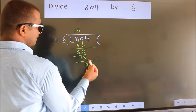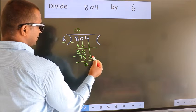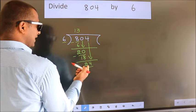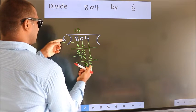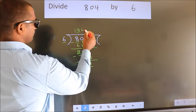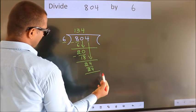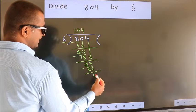After this, bring down the beside number. So 4 down. So 24. When do we get 24? In 6 table. 6 times 4 is 24. Now we subtract. We get 0.